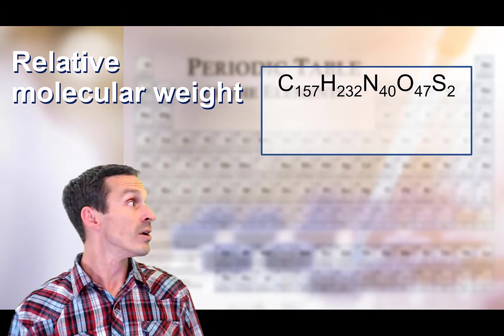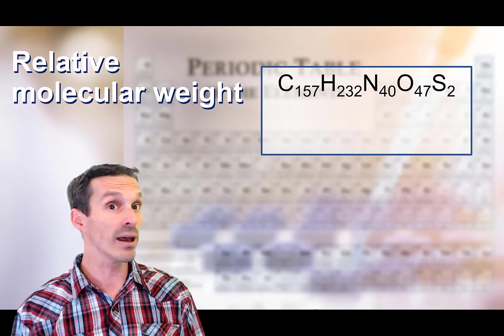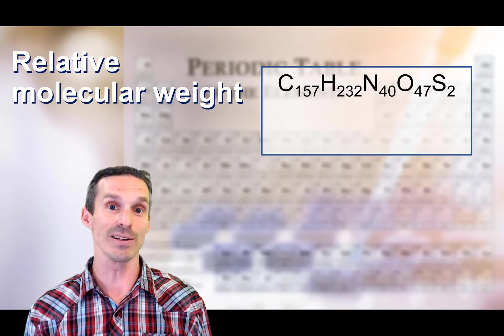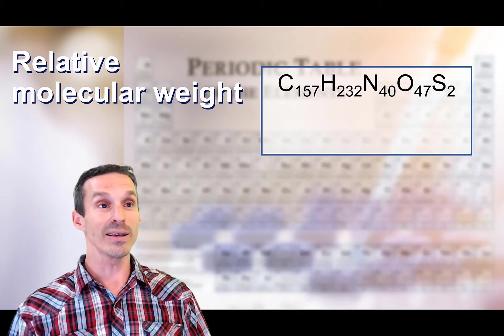So there's the formula and we have our periodic table. Now obviously we're going to use something that's got a lot of decimal places. Let's just go ahead and calculate the molar mass of this compound.